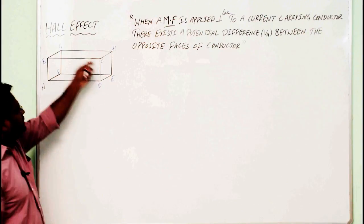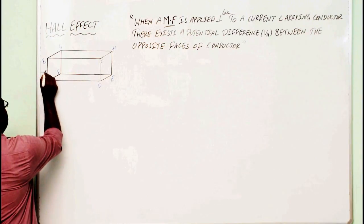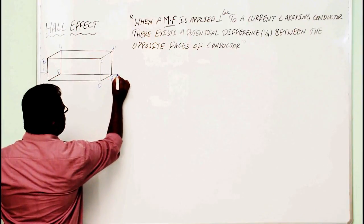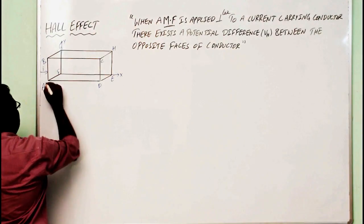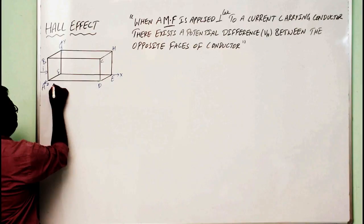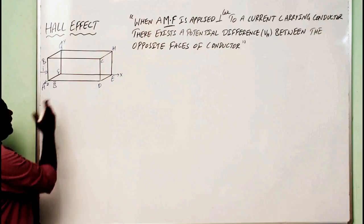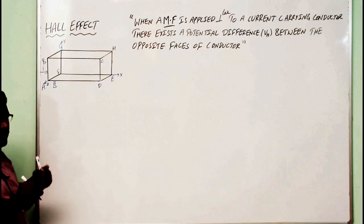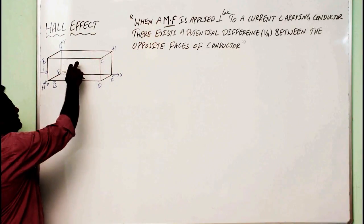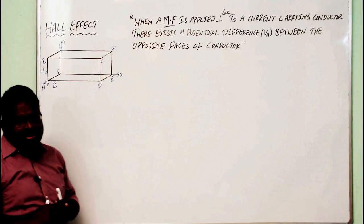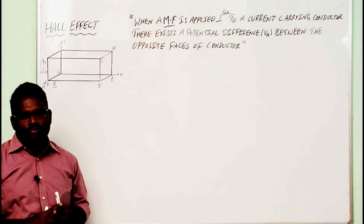Consider a rectangular current-carrying conductor. Apply the electric field along the x-direction. This is the y-direction, and this is the z-direction. Along the z-direction, you can have a magnetic field, and along the x-direction, you can have an electric field. Since both are perpendicular to each other — if this material is of n-type semiconductor, the majority charge carriers are electrons; if it is p-type semiconductor, the majority charge carriers are holes.